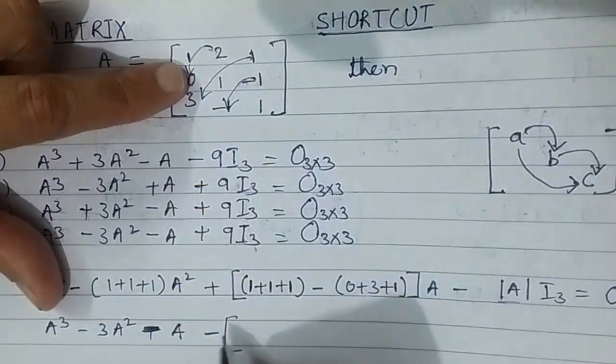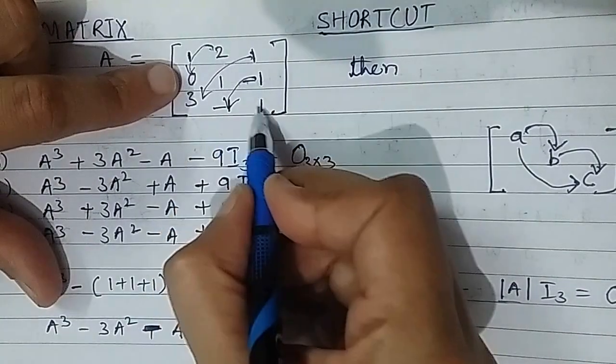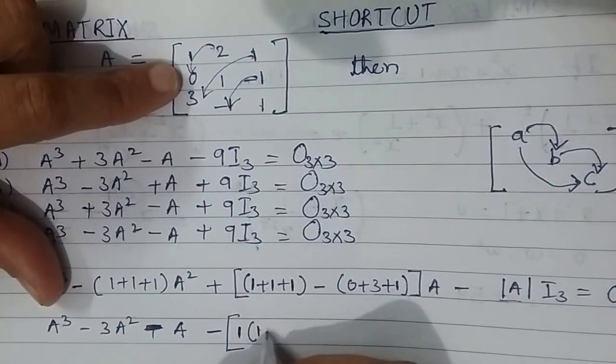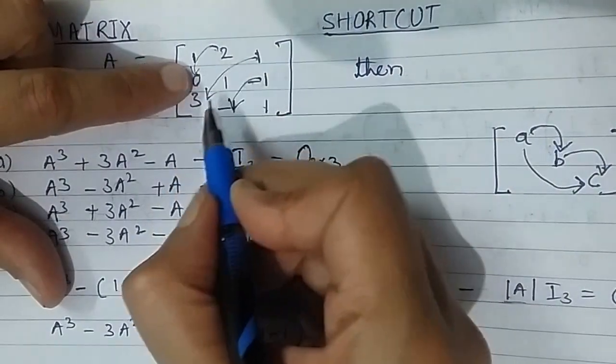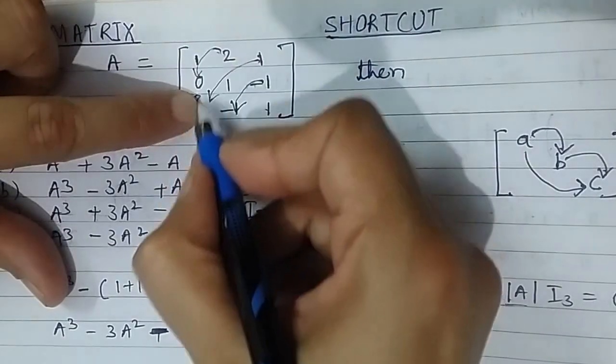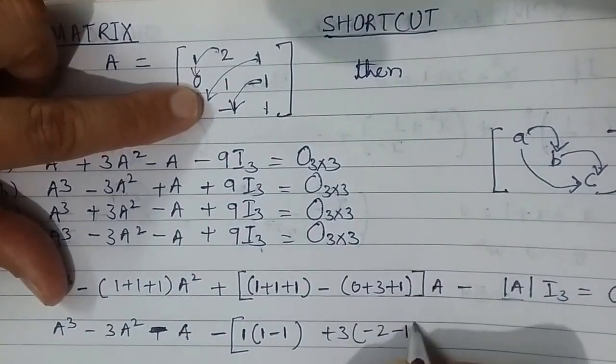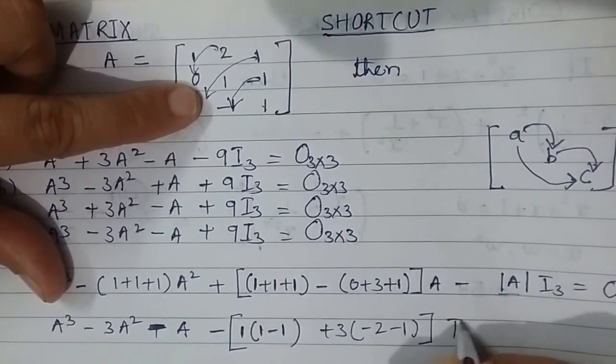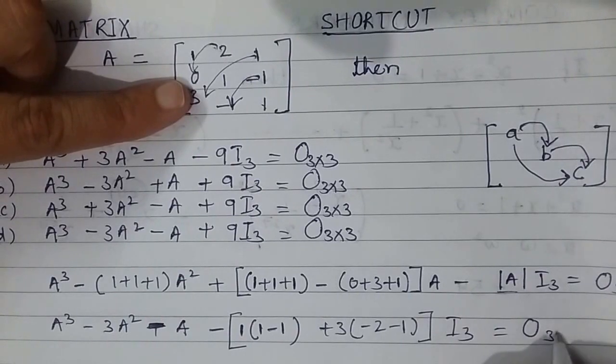If I expand it row-wise, this is 1 times (1 into 1 minus -1), then this middle term will be 0, then plus 3 times (2 times -1 minus -1 times 1). So this is value of determinant. Then I₃ equals the 3 by 3 identity matrix.